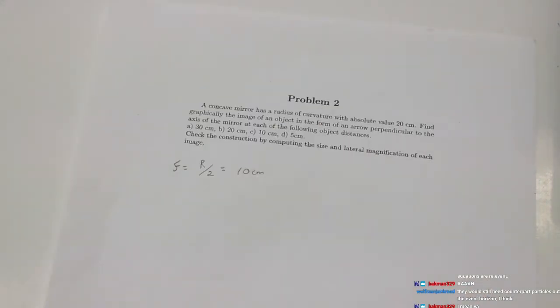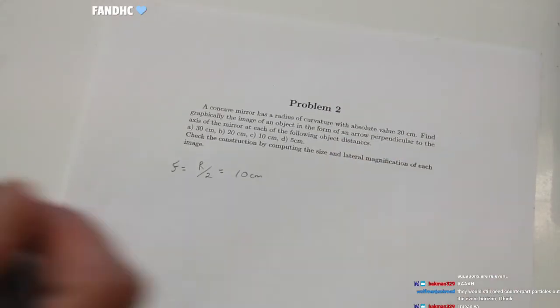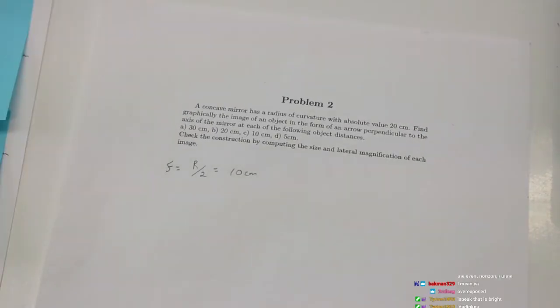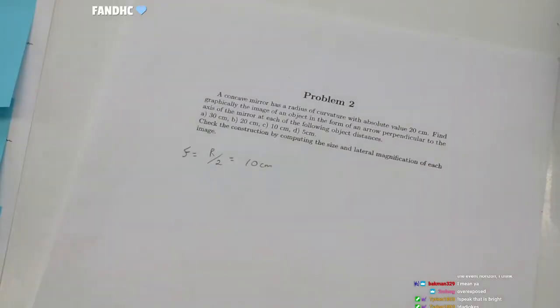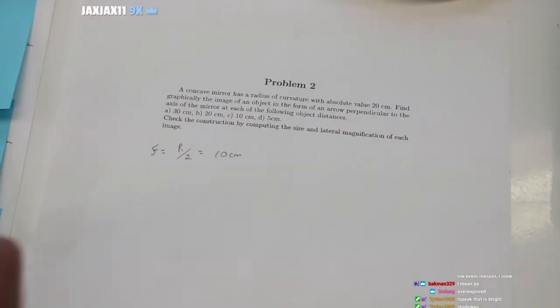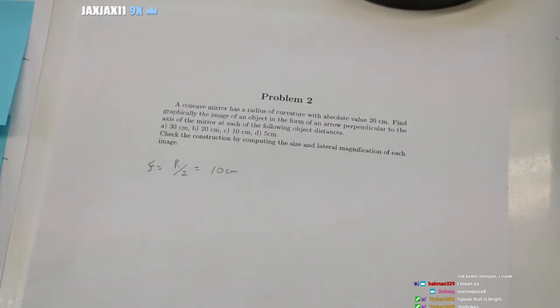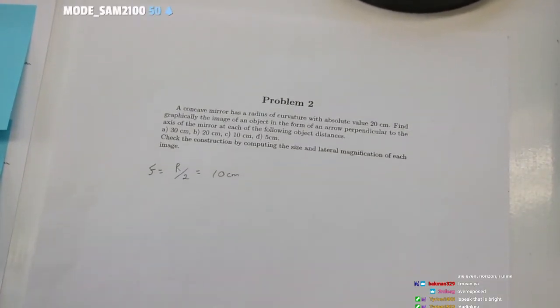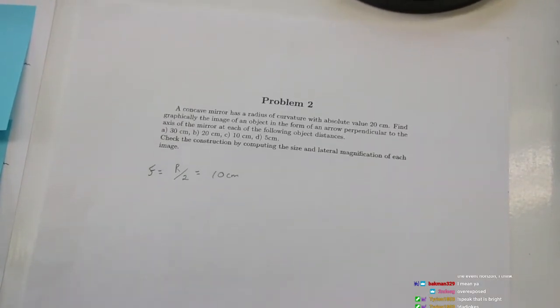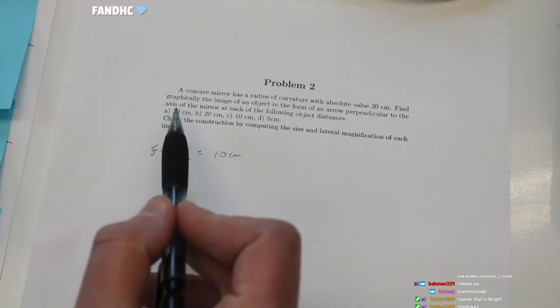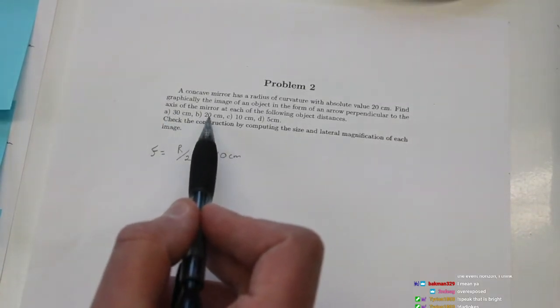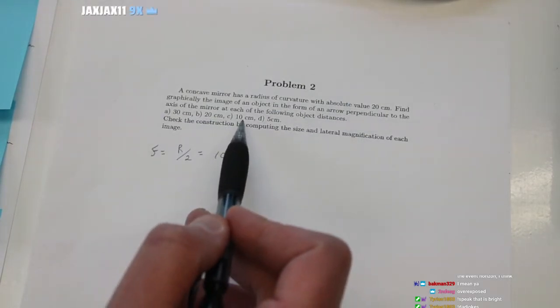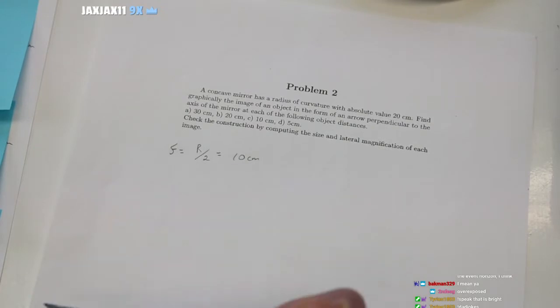Ray tracing is kind of cool, and we're only going to do one or two examples, but let's do it really quick so I can show you what we're doing — and this is going to feed into our building stream. Let's talk about this question: a concave mirror, which is what we're dealing with, has a radius of curvature with an absolute value of 20 centimeters. Find graphically the image of the object at each of the following distances — one outside the radius of curvature, one at 20 centimeters which is the radius of curvature, and one at 10 centimeters which is the focal length.